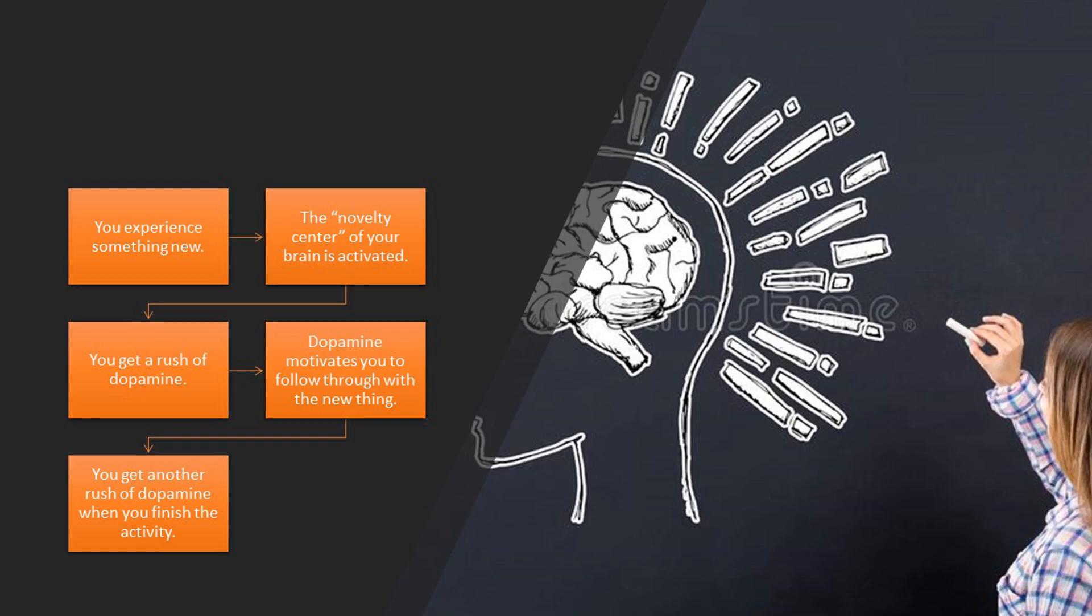You experience something new, then the novelty center of your brain is activated. After that, you get a rush of dopamine. Dopamine motivates you to follow through with the new thing, and finally you get another rush of dopamine when you finish the activity as a reward.